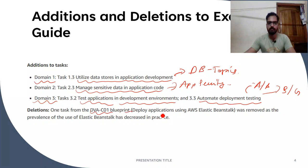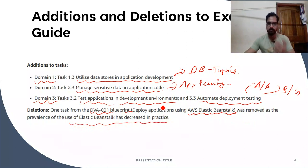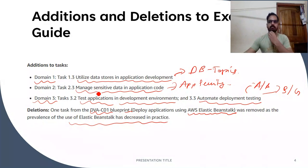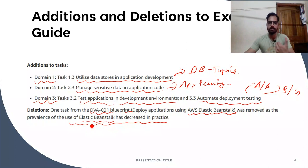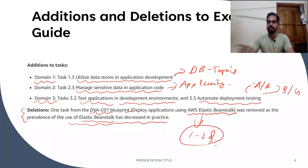What has been removed from the DVA-C01 blueprint is that questions on AWS Elastic Beanstalk have been reduced. Elastic Beanstalk is a service where you can directly write and deploy your code, but its use has decreased in practice because nowadays people prefer Dockerized containers running on ECS and ECR. People also like to deploy on auto scaling groups, and serverless technologies are on the rise. Elastic Beanstalk has been drastically reduced, but you may still get one or two questions in the exam.